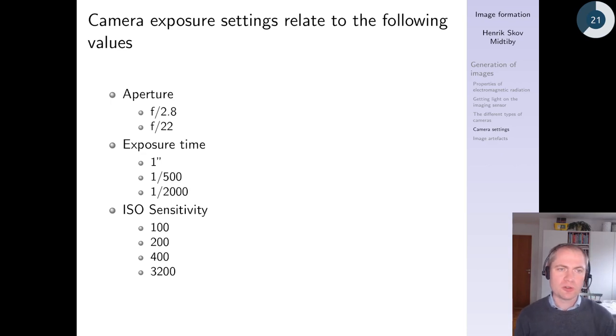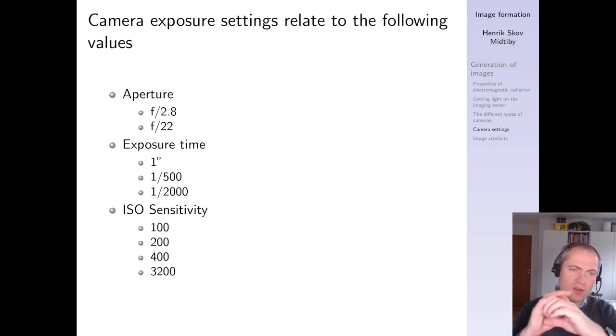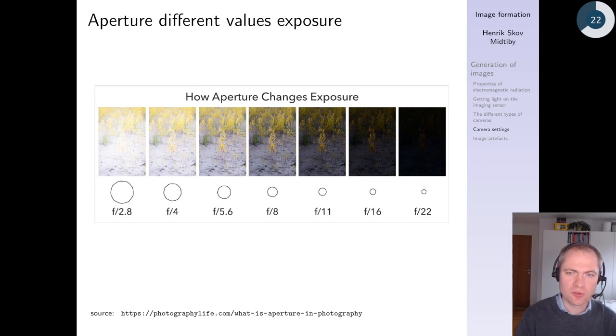We can also take a look at what settings there are available in our camera. And we have mainly three types of settings. We have the aperture, which adjusts the size of the hole where light is allowed to go through inside the lens. We have the exposure time, that is the duration where light is allowed to go through the camera and into the CCD sensor or CMOS sensor. And finally we have the ISO sensitivity, which is a measure of how much light you need to get into the sensor to actually get a full exposure. So let's take a look at those one by one.